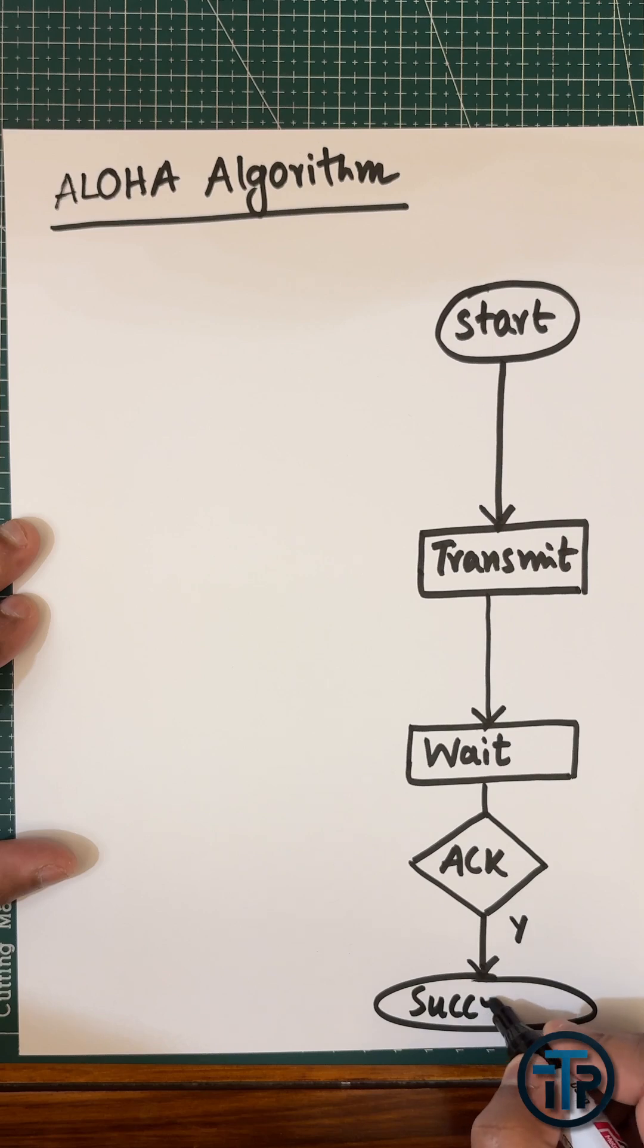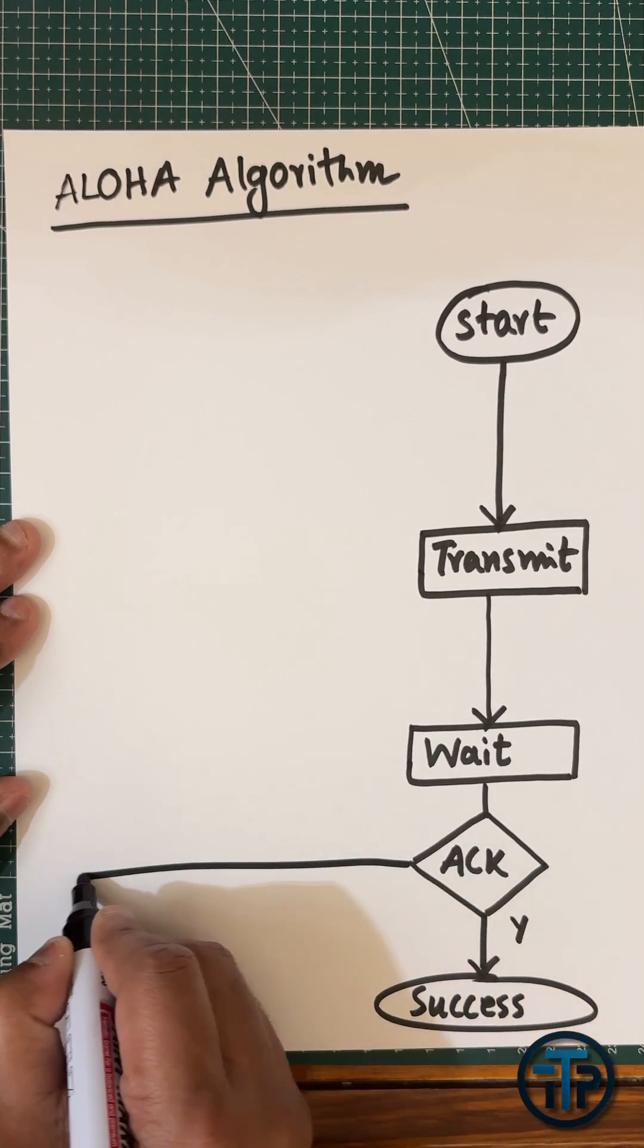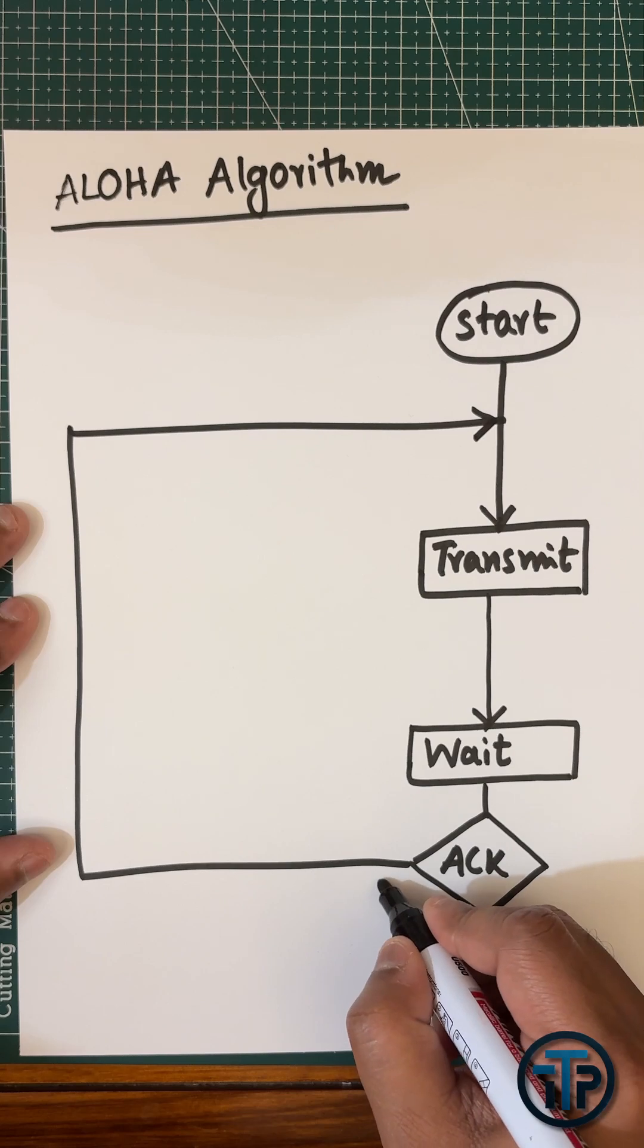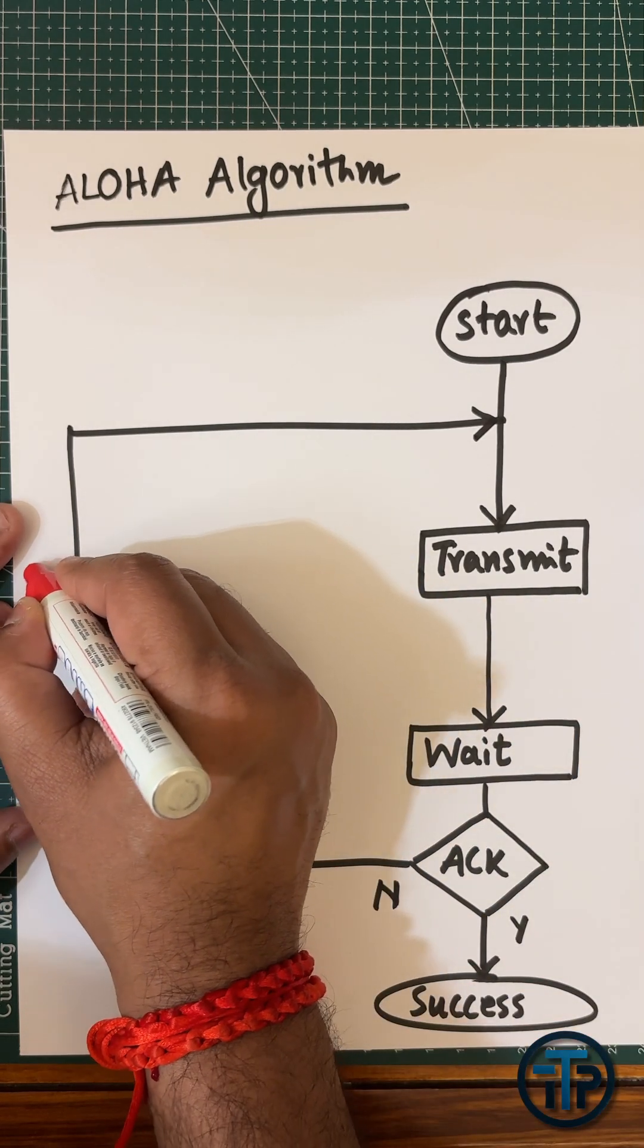you can get the acknowledgement successfully, then it is success. If you don't get the acknowledgement, it means you have to retransmit.